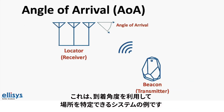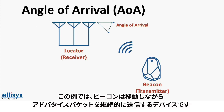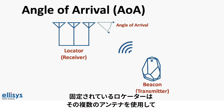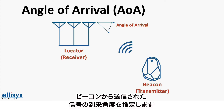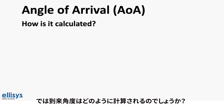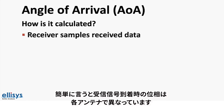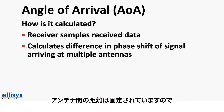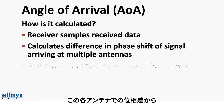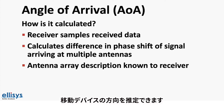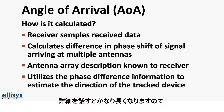Here's an example of a system that can utilize angle of arrival to determine location. In this example, the beacon is a moving device that continuously transmits advertising packets. The receiver, which is usually fixed, uses its multiple antennas to estimate the angle of arrival of the signals transmitted from the beacon. The received signal will have a different phase when arriving at each of the antennas. Based on the difference between the phases of the received signal at each antenna, and since the distance between the antennas is fixed and known to the receiver, it can estimate the direction of the moving device.